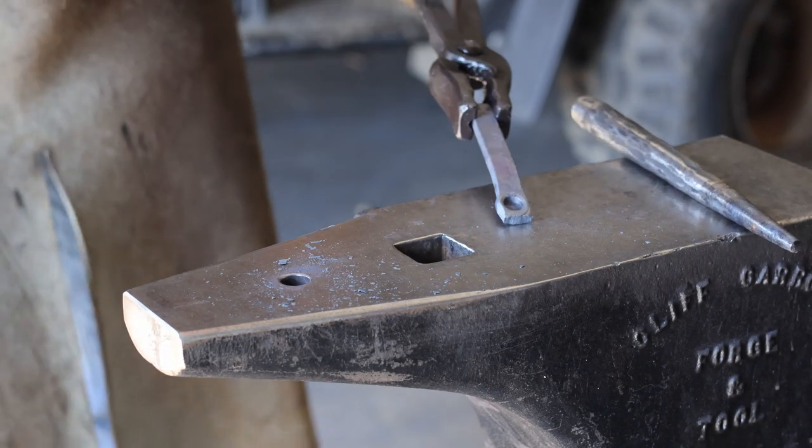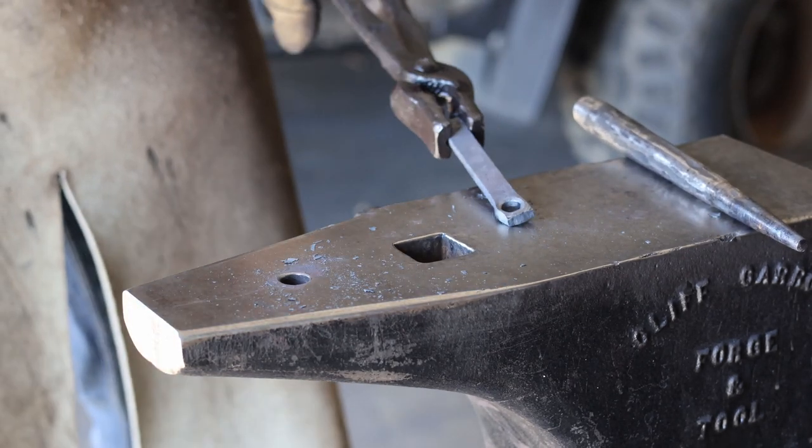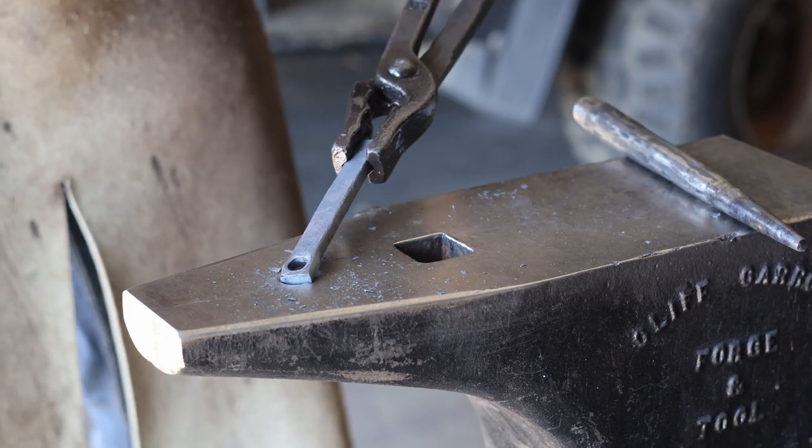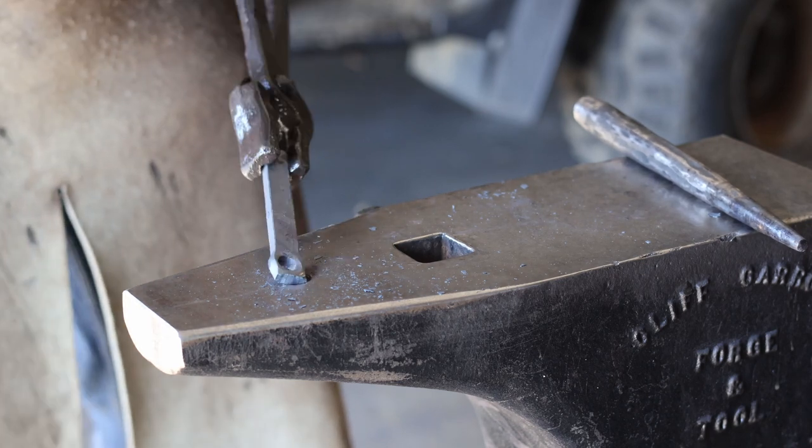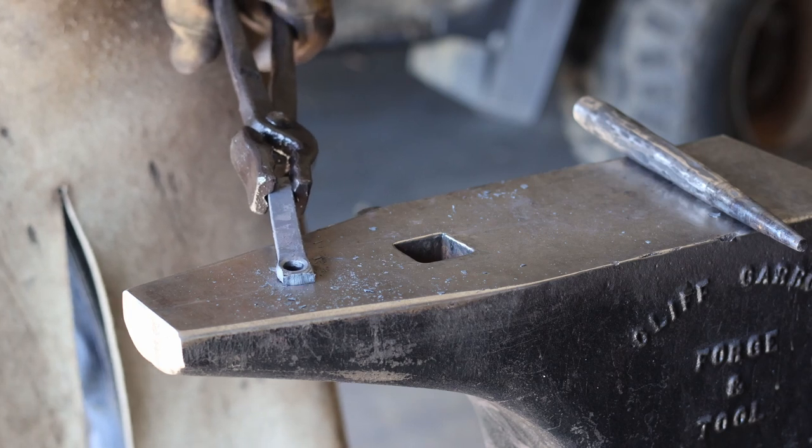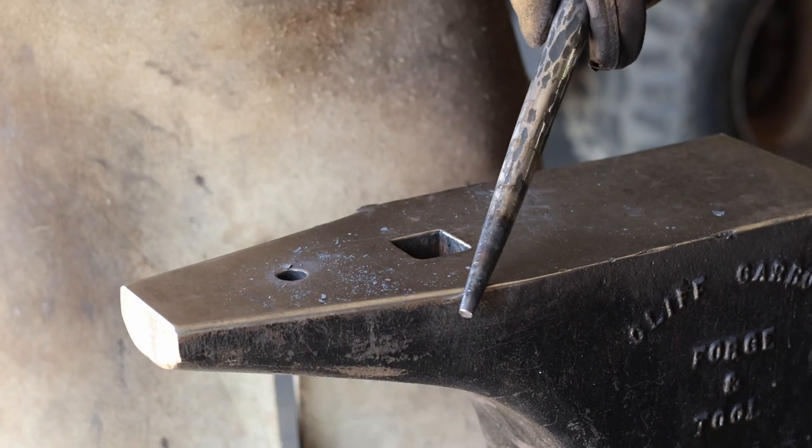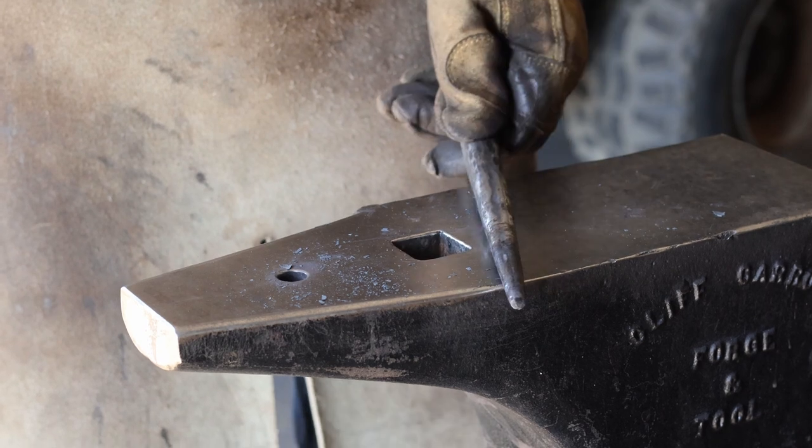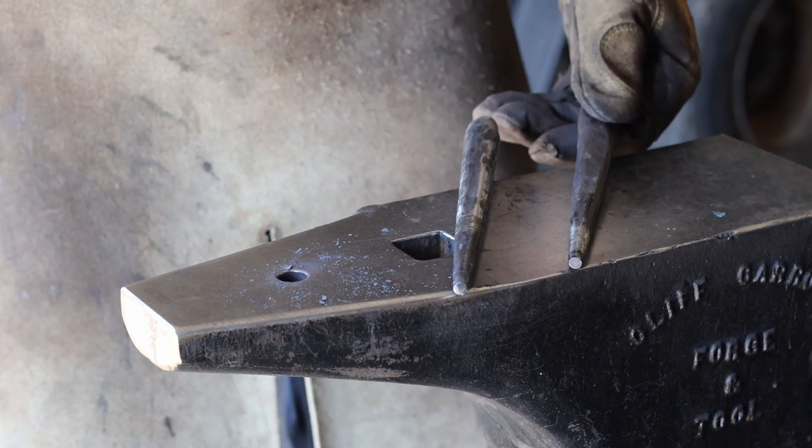Now something you might not notice is that I'm turning this over each time I bring it back to the anvil. And that's because no matter how rounded off your pritchell hole is, you're going to get kind of a ring around the outside. And I'm kind of evening that out and making sure that as I bring it back, I'm not putting extra divots or dents into the same side. Now if you're interested in learning how to forge this round drift or my round punch or ball end punch, drop a comment down below.